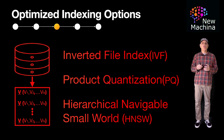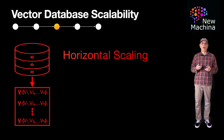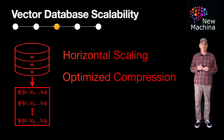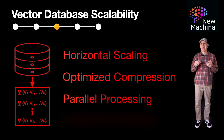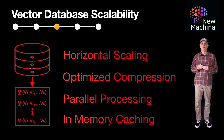So what makes vector databases scalable? Vector databases are distributed by design and deployed as nodes, so adding more nodes enables you to horizontally scale. Vector databases also support vector-optimized compression techniques which optimize storage. As you would expect, they can handle N simultaneous queries. And finally, in-memory caching for frequently read vectors is a very common feature supported.